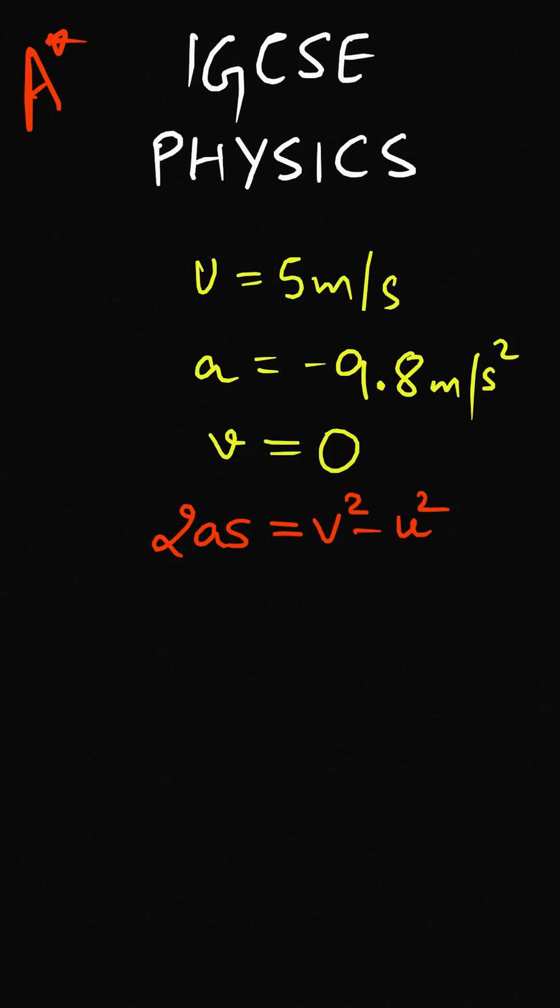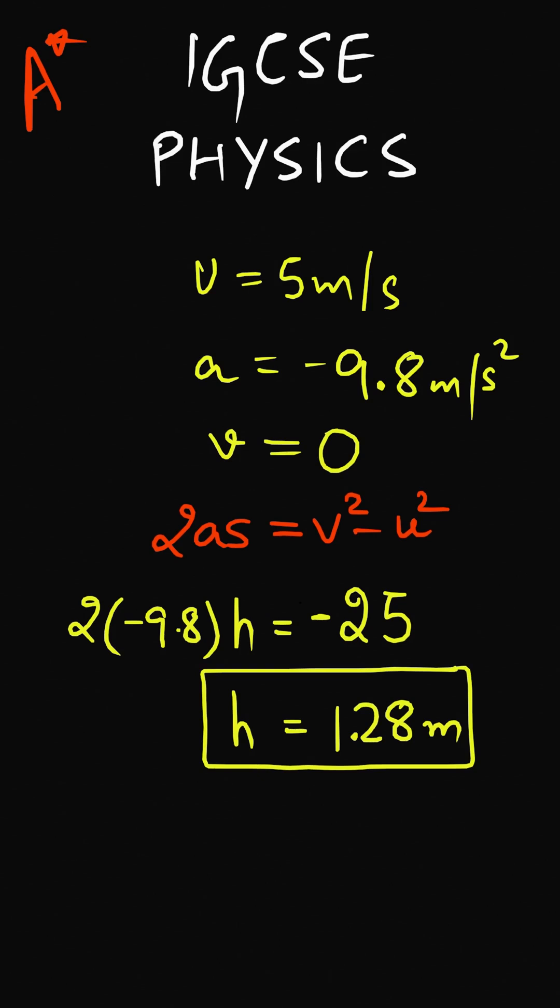On substituting the value of A as minus 9.8, V as 0, U as 5, we can solve for H which is the maximum height attained by the ball. On further simplification we get H as minus 25 divided by minus 19.6. The negative signs cancel out and we are left with H as 1.28 meters. Thus the maximum height attained by the ball is 1.28 meters.